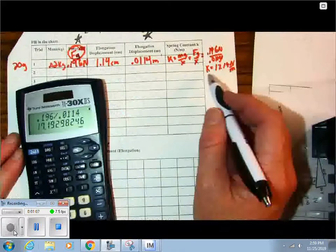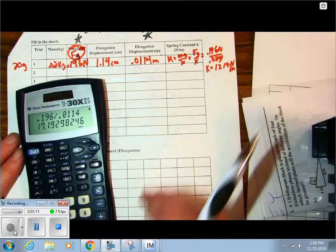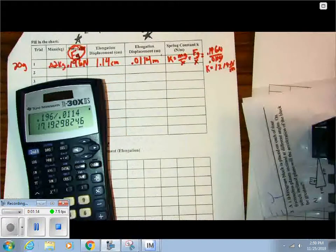That got me my final answer. That's my K value, 17.19 newton meters. No, no, no, no.